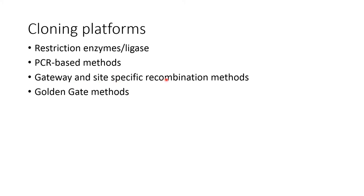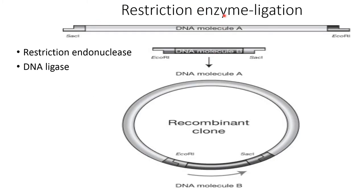Other methods include Gateway and site-specific recombination, and Golden Gate methods. In the case of the restriction enzyme ligation method, the enzymes used to cut the vector are the same enzymes used to cut the gene of interest. After creating a cut in both the vector and the gene of interest, the gene of interest will be inserted into the plasmid with the help of DNA ligase.